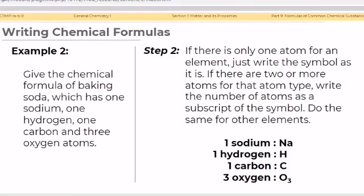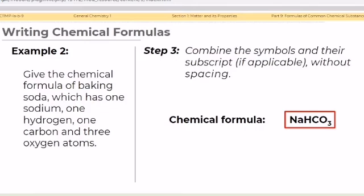Step 3: To designate that there are three oxygen atoms. Combine the symbols and their subscript, if applicable, without spacing. We can write the chemical formula as NaHCO3.